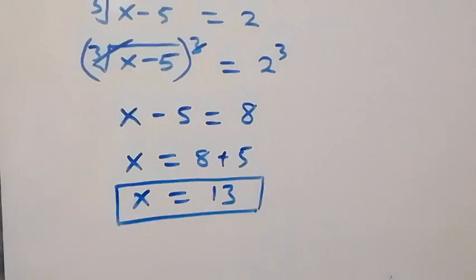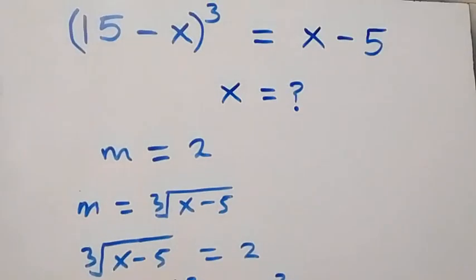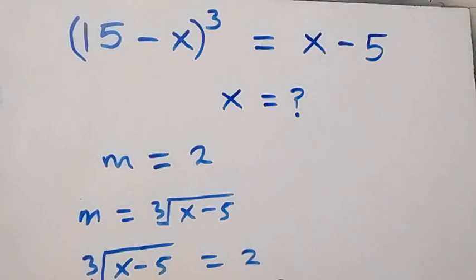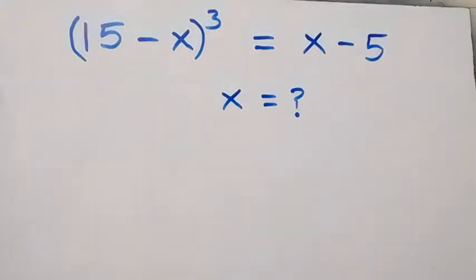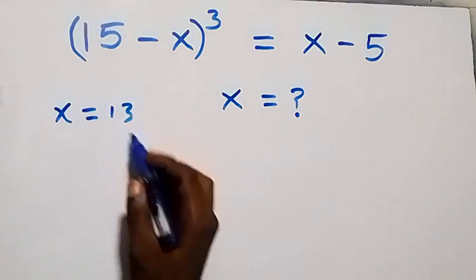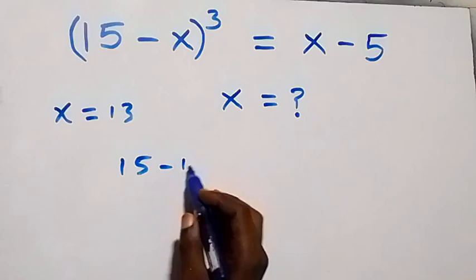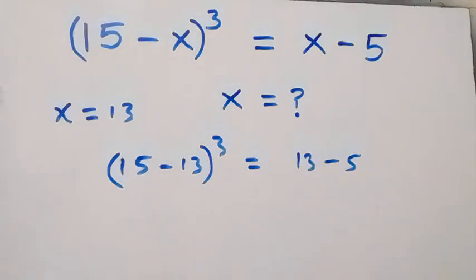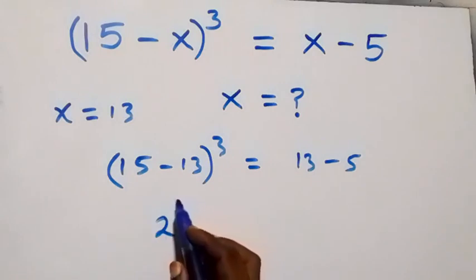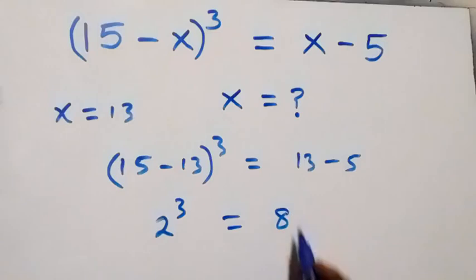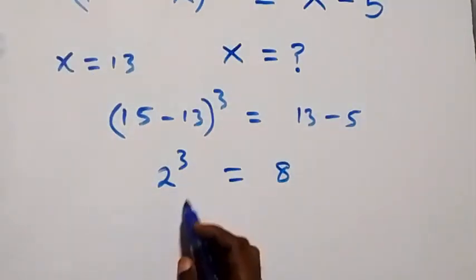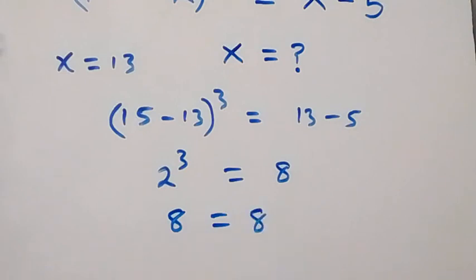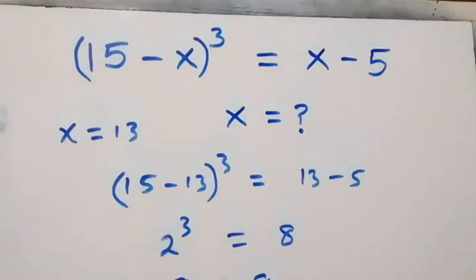Let's verify by substituting x equals 13 into the original equation. We get 15 minus 13, which is 2, cubed, equals 13 minus 5, which is 8. On the left side, 2 cubed equals 8, and the right side is also 8. Left hand side equals right hand side, confirming that x equals 13.